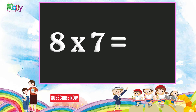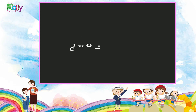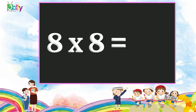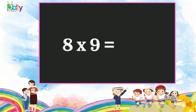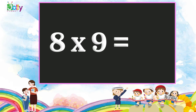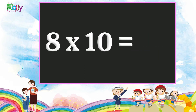Eight sevens are fifty-six. Eight eights are sixty-four. Eight nines are seventy-two. Eight tens are eighty.